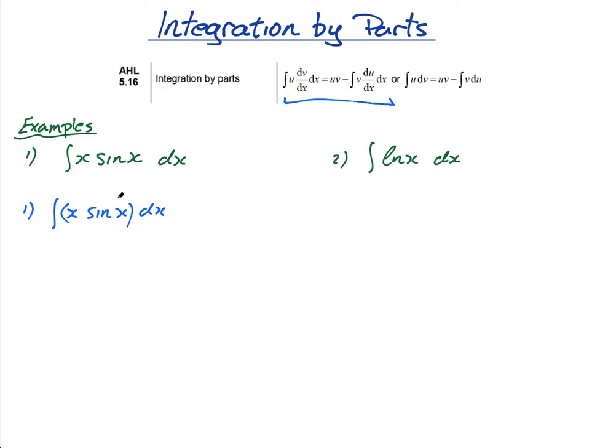Now, often the tricky bit of integration by parts is deciding which to choose for u and which to choose for dv dx. And just because this comes first, doesn't mean I should automatically choose x for u and sin of x for dv dx. But I will choose x for u, and I'll explain why in a second. So, we're going to let u equal x.